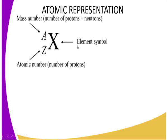To represent an element, we use its symbol X, with a superscript A for the mass number — which is the number of protons plus neutrons — and a subscript Z for the atomic number, which is the number of protons. That is how we illustrate the mass number and atomic number of a given element.